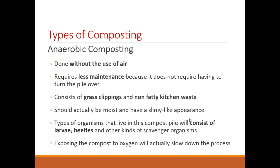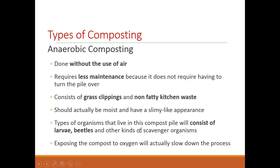Anaerobic composting is done without the use of air. It requires less maintenance and no turning over, since there is no need to aerate. It uses materials such as grass clippings and non-fatty kitchen waste. It is typically moist and produces a slimy type of compost. Organisms such as larvae, beetles, and other scavenger organisms live in it. Exposing the compost to oxygen will actually slow down the process, since this type operates without air.